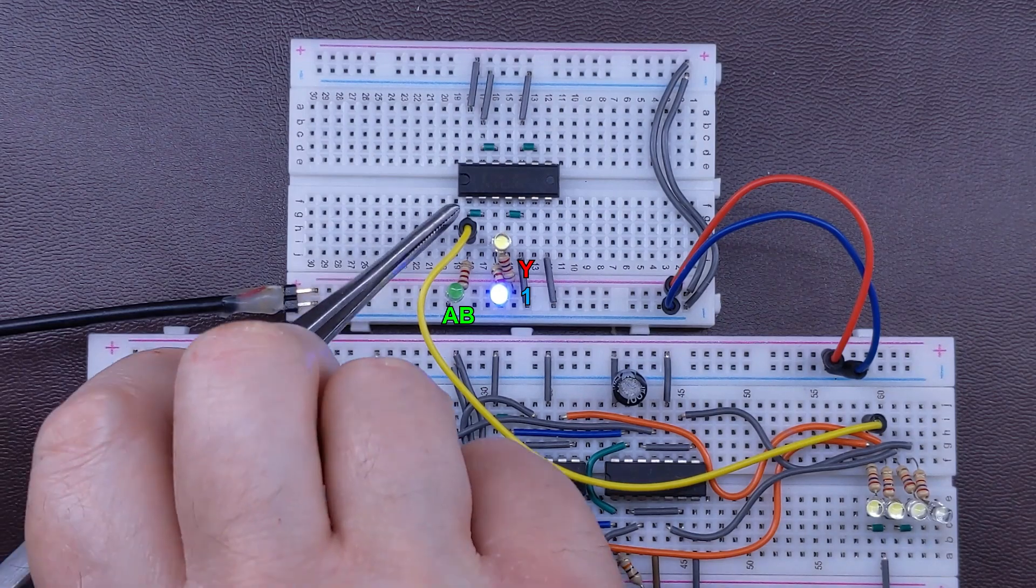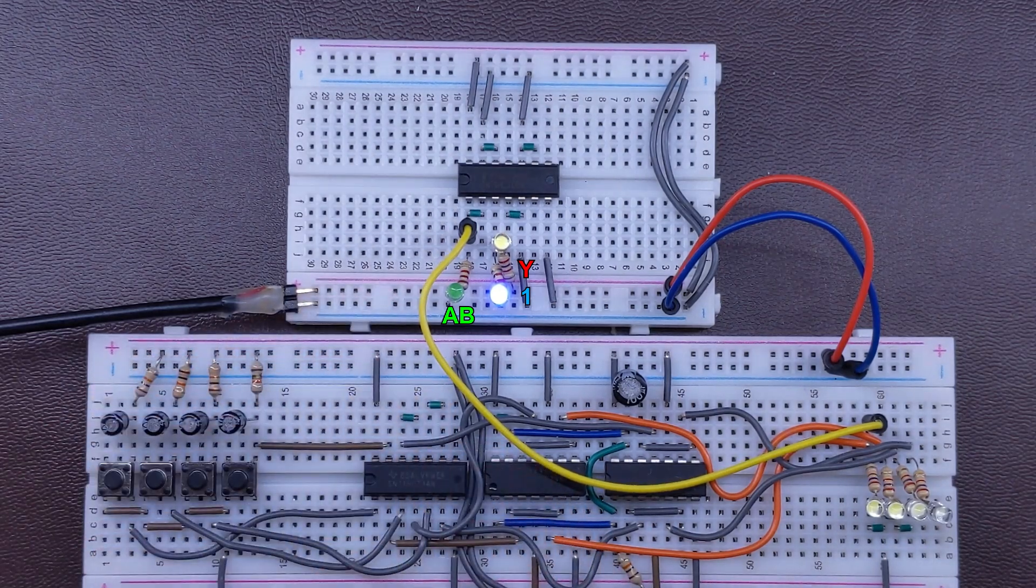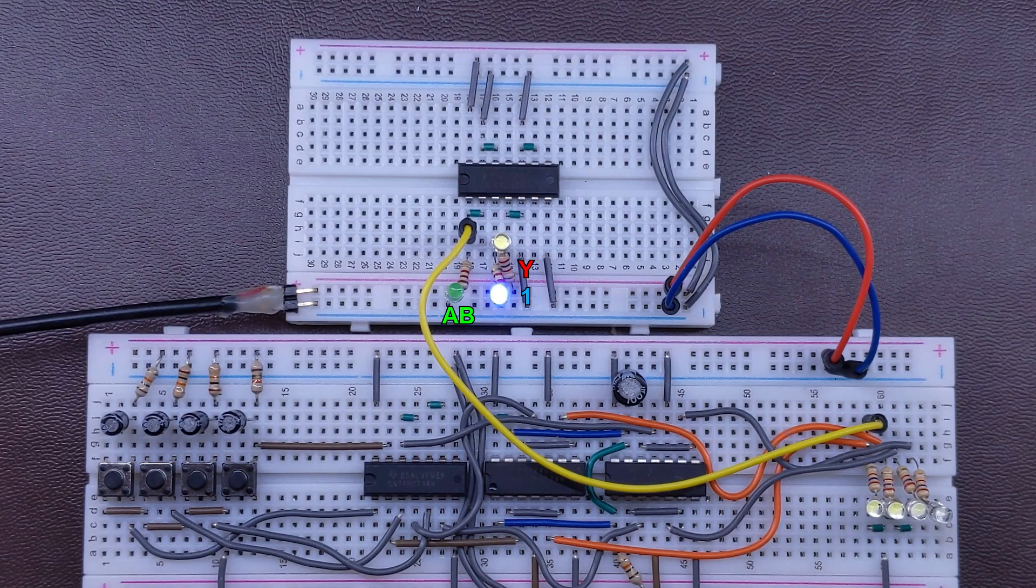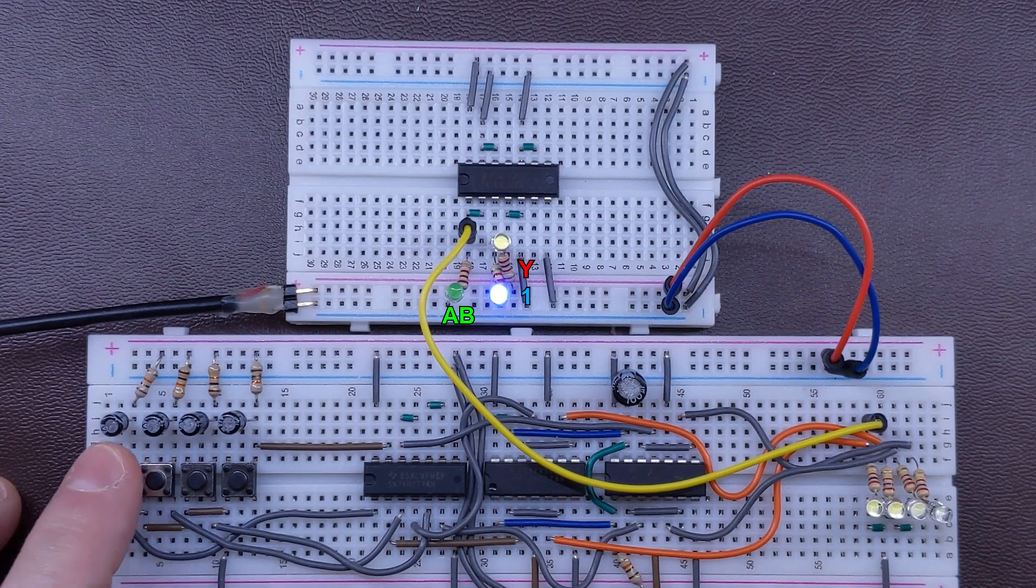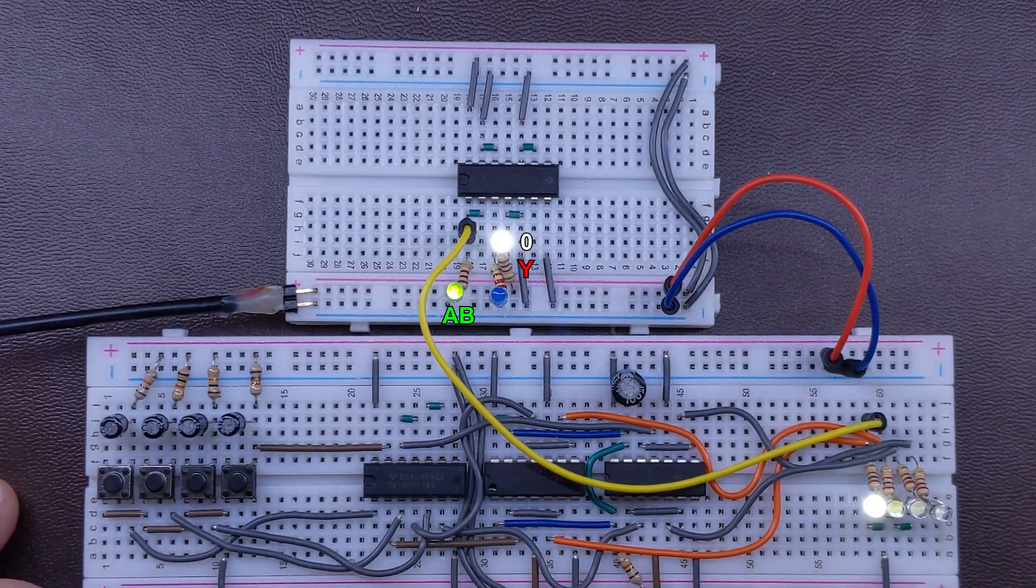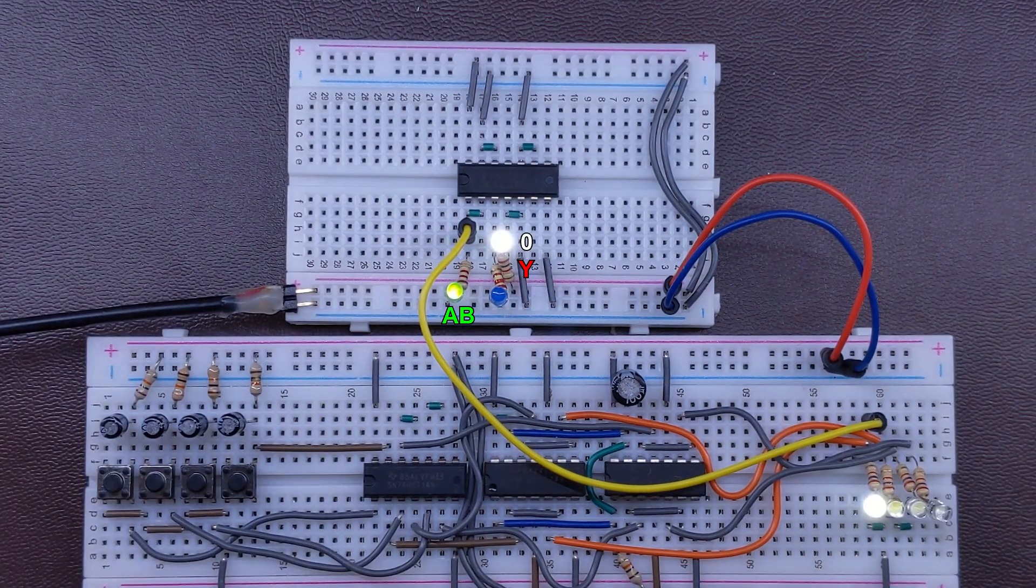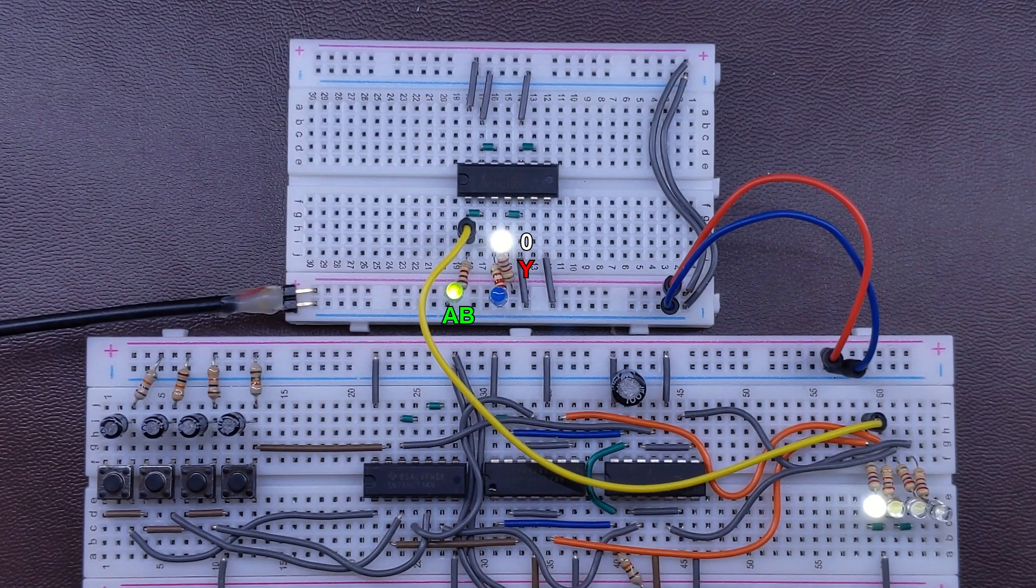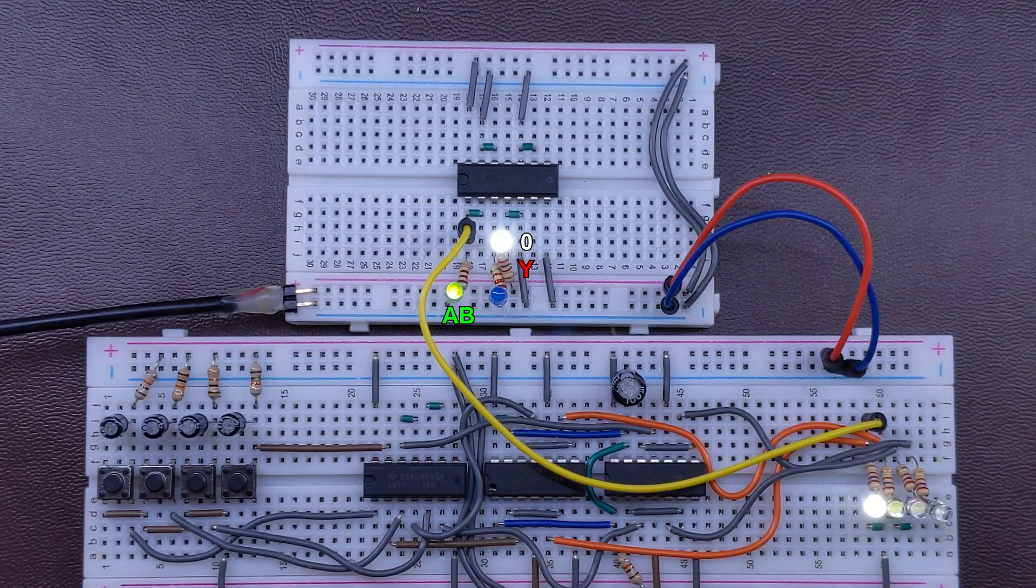I joined both inputs of the first gate together. If you remember, it would effectively work as an inverter. The logical 0 on its inputs will set the output to 1 and 1 on the inputs causes 0 on the output. Nothing unexpected, apart from the fact that we can clearly see both logical states on the output shown by two separate LEDs, right?